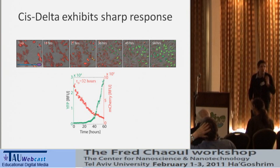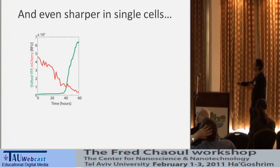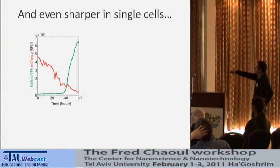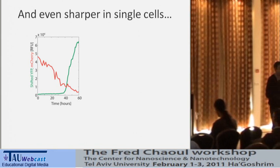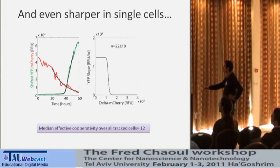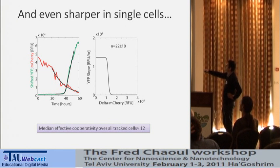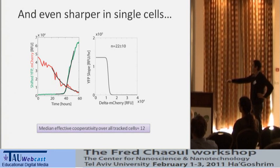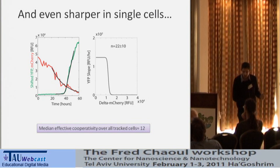Looking at single cells, we see an even sharper response. One cell shows Delta levels decaying slowly, and the response shows nothing, nothing, nothing — and then boom, turns on abruptly. This is a very switch-like behavior with respect to cis-Delta. Analyzing this, we find that the effective Hill coefficient for this cell is 22 plus or minus 10 (95% confidence interval). The median Hill coefficient is about 12 — so it's a very sharp switch-like response to cis-Delta.